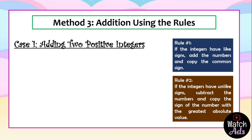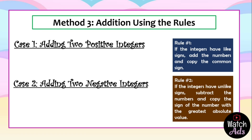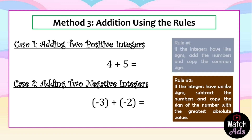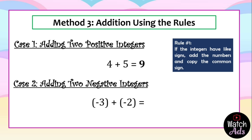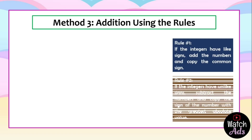For case one, adding two positive integers, and case two, adding two negative integers — both are like signs, so we use rule one. For case one, four plus five: add the numbers, the common sign is positive, so four plus five equals nine. For case two, negative three plus negative two: add the numbers, three plus two is five, then copy the common sign which is negative. The final answer is negative five.